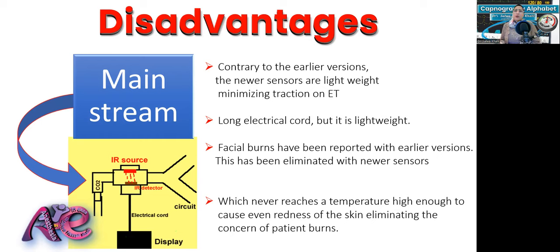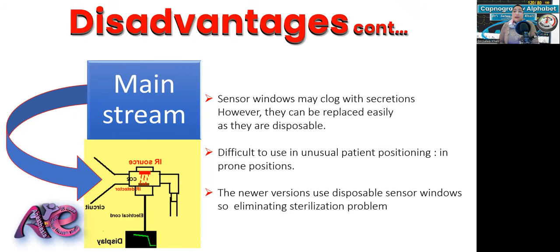Earlier mainstream capnography versions reported facial burns due to overheating of the airway adapter needed to prevent water vapor condensation; new sensors never reach temperatures high enough to cause even skin redness. The sensor window may clog with secretions, but these are disposable and easily replaced. Mainstream capnography is more difficult to use in unusual positioning such as prone position compared to sidestream. The new version uses disposable sensor windows, eliminating sterilization concerns.